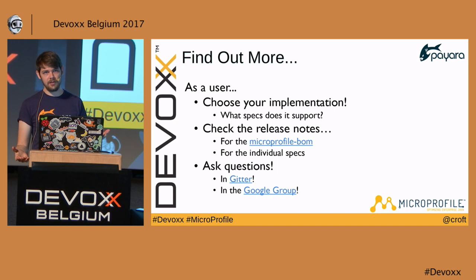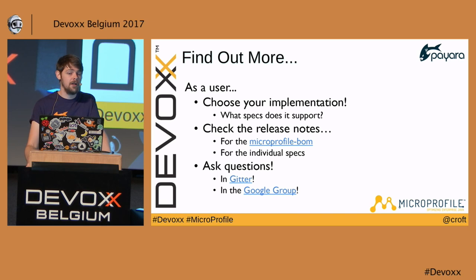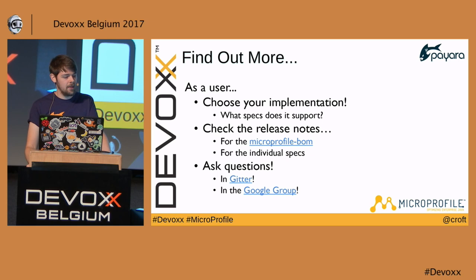The spec docs are super easy to read — written by developers for developers — so that's definitely the best place to start. Also ask questions: each specification has a Gitter group closely tied to GitHub where you can ask about behavior if something is ambiguous in the spec docs, and then maybe file an issue or pull request.